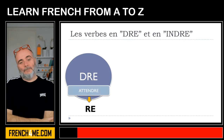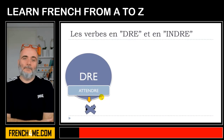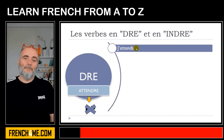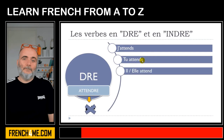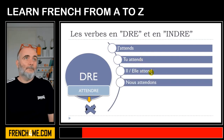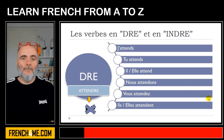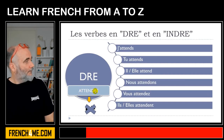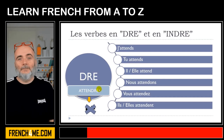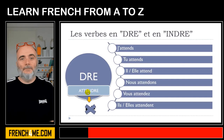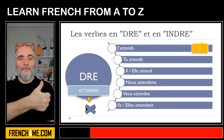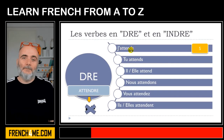For ATTENDRE, the ending is DRE, and the key thing to keep in mind is that you will take the RE away. So you get the stem ATTEND-, and then you add the endings. For je, it will be S — j'attends. For tu, it will also be S — tu attends.